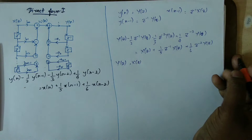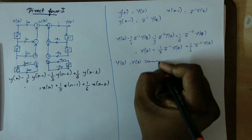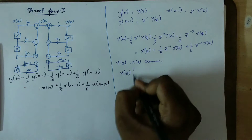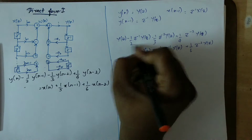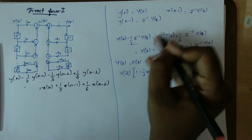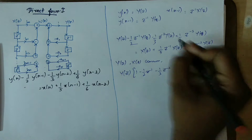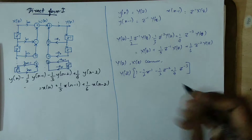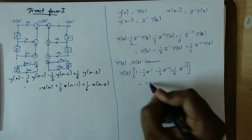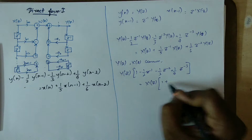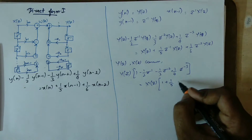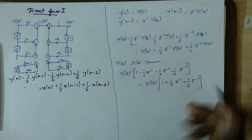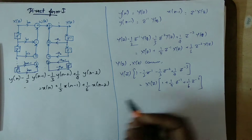Equal to X(z), equal to z^(-1) · X(z), equal to z^(-2) · X(z). Coming to X(z): 1 plus 1/5 · z^(-1) plus 1/6 · z^(-2). Okay, so here we go — realization point.